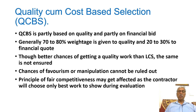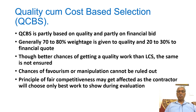In quality cum cost based selection (QCBS), the idea is to consider both quality and financial aspects. Higher weightage — say 70 to 80 percent — is given to quality, and 20 to 30 percent weightage is given to the financial bid. First, technical bids are evaluated by a committee who assigns scores. Then financial bids are compared: the lowest financial bidder is used as the reference, and all bids are scored relative to that. Whoever scores the maximum combined score is considered for acceptance.